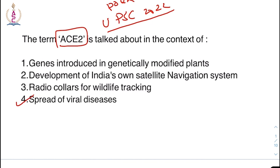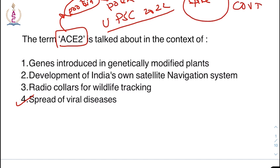ACE2 is a protein. When the virus attacks, it binds to this protein. The spike protein — as we must have heard in the news with respect to COVID-19 — comes and binds to this receptor, which is a protein. That is the reason why this question was asked.